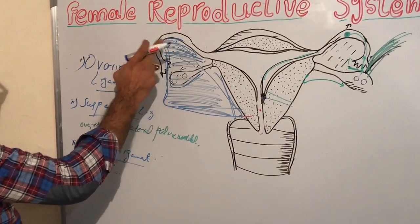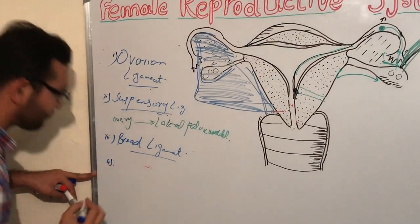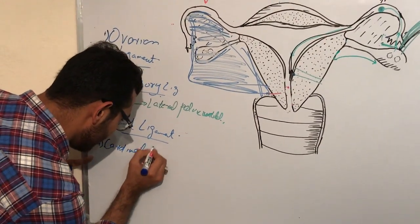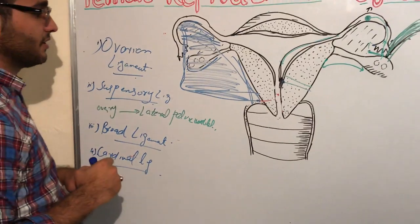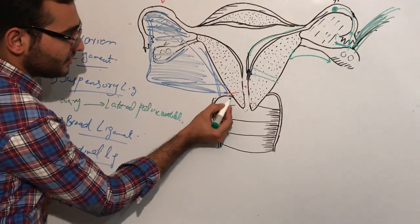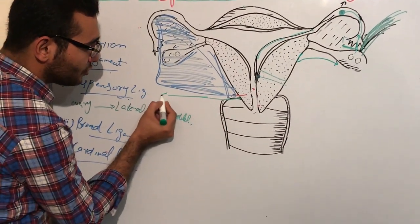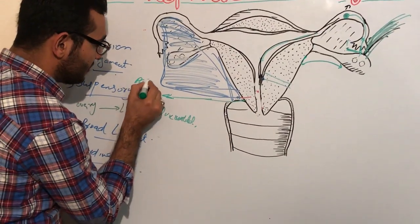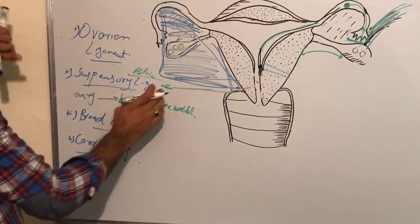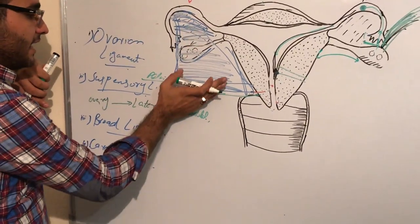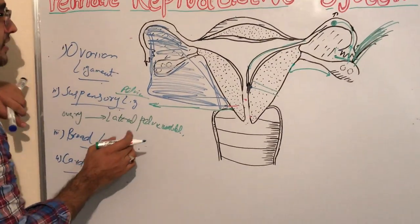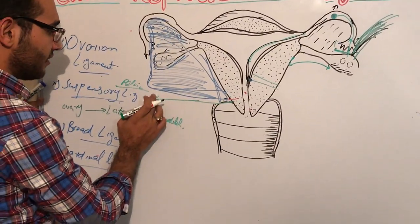The next ligament is the cardinal ligament. This ligament starts just below the broad ligament. This area here is known as the cervix. The cardinal ligament runs from the cervix to the lateral wall of the pelvis. Just below the broad ligament — which provides protection to the uterus, ovary, and fallopian tube — is the cardinal ligament, starting from the cervix to the lateral wall of the pelvis.